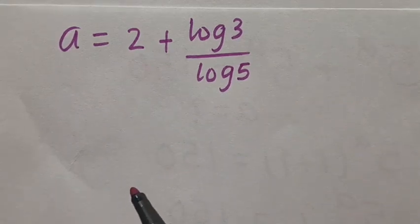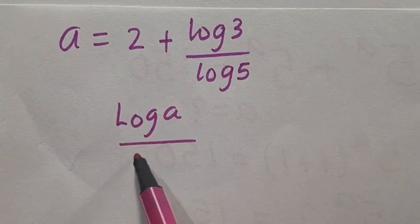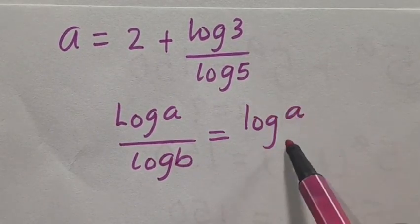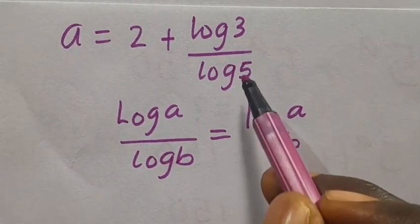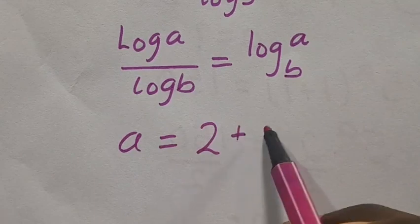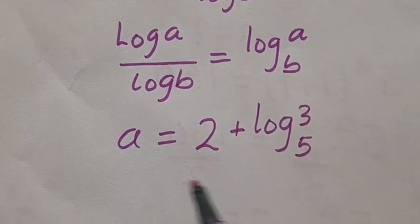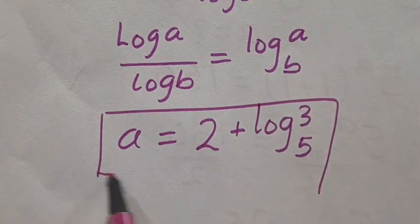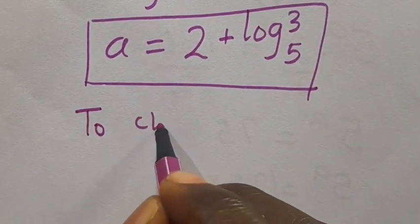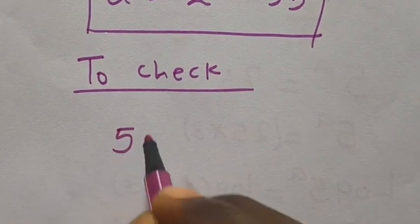Recall that log a divided by log b equals log a in base b — this is the change of base formula. Applying it here, we get a equals 2 plus log 3 in base 5. That is our final answer in its simplest form.